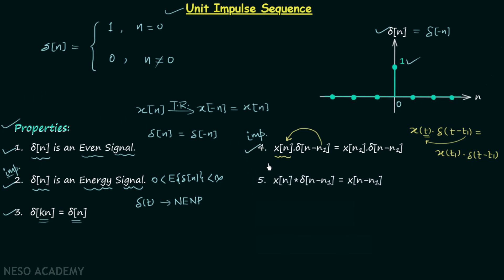Moving to the fifth property: when x[n] is convolved with delta[n - n1], n is replaced by n minus n1, and the result is x[n - n1].